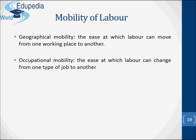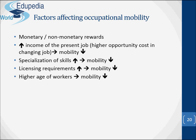The mobility of labor involves two types: geographical mobility, which is the ease at which labor can move from one working place to another, and occupational mobility, which is the ease at which labor can change from one type of job to another. Factors that affect occupational mobility include monetary or non-monetary rewards, opportunity cost of changing jobs, specialization of skills, licensing requirements, and higher wages.